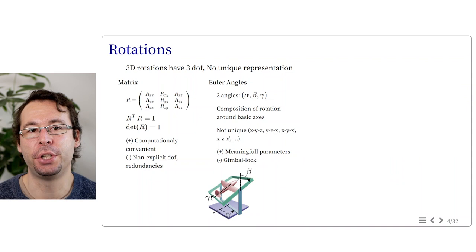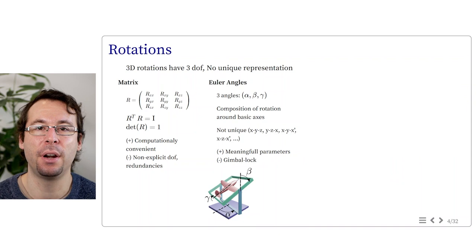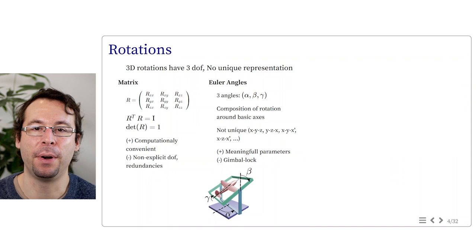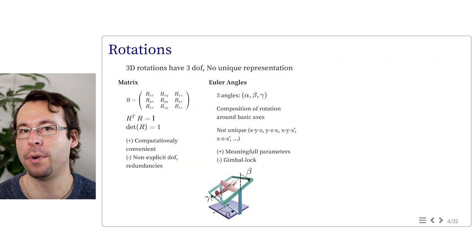The second approach is Euler angles, which describes a rotation with three angles corresponding to three basic rotations around specific axes, decomposed one after the other. Euler angles themselves have several representations. The advantage is that they represent rotation with three angles, which is more meaningful than nine matrix components. However, Euler angles suffer from a defect called gimbal lock, making this representation not well suited for computation.